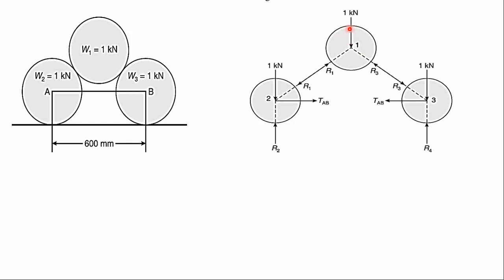For the free body diagram of sphere one: self weight acts downward. At the contact with sphere two, reaction R1 develops. At the contact with sphere three, reaction R3 develops. For sphere three's free body diagram: self weight acts downward, a vertical reaction R4 develops at the horizontal surface, tension TAB acts from the cable connected to sphere two, and reaction R3 acts equal and opposite at the contact with sphere one.